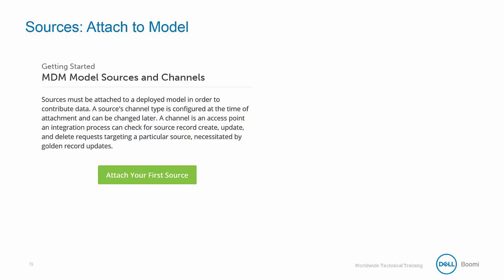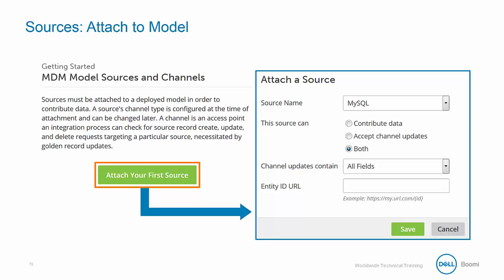As we can see here, before we attach our first source, we're given a brief description and a large green attach button. This will bring up our attach a source window that will allow you to configure the source's permissions. You can toggle these options for a given source at any time. Source name will allow you to select the source you'd like to attach from a drop-down menu. Once a source is attached, it will no longer appear in the source name drop-down menu for this model within this repository. The 'this source can' option allows you to designate whether you want the source to contribute data, accept channel updates, or do both. Contribute means that data can flow from the source to the MDM repository, and accept means that data can flow from the MDM repository to the source. The channel update options will either be all fields or changed fields only. All fields will send the entire golden record out to the source system when a change is made. Changed fields only will only send the fields that actually changed out to the source systems.